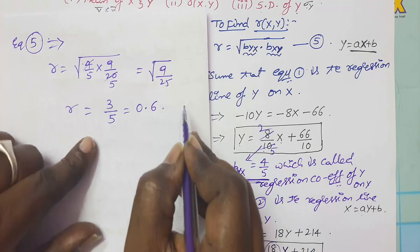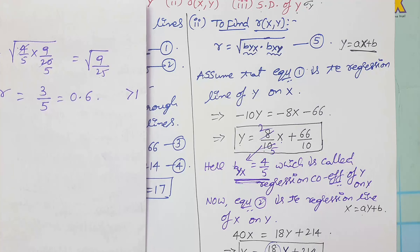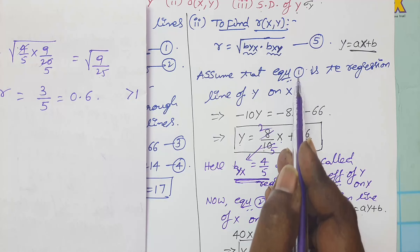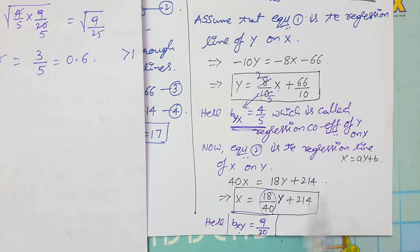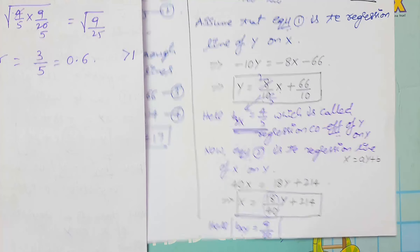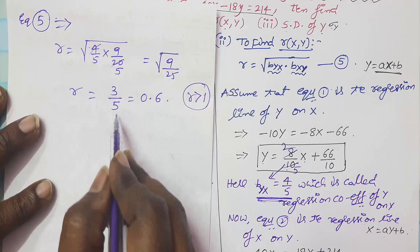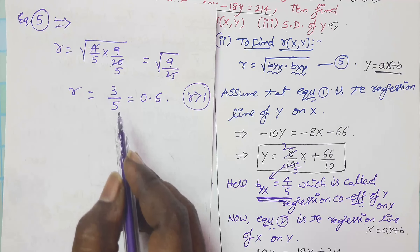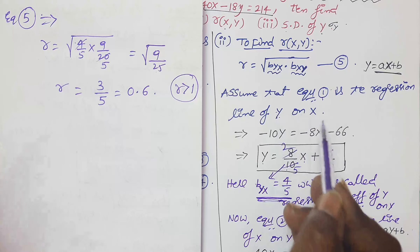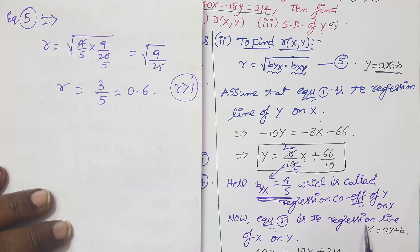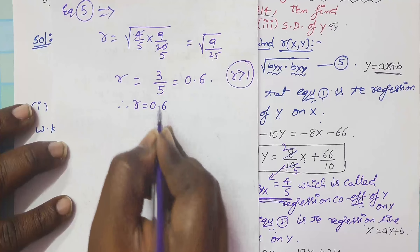Note: if you get r greater than 1 using these values, then our assumption is wrong. That means you should take equation 1 as the regression line of x on y, and equation 2 as the regression line of y on x. Whenever r greater than 1, swap the assumptions. Here r equals 0.6, which is valid.